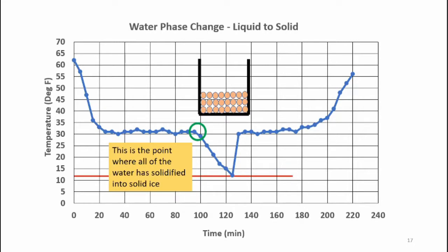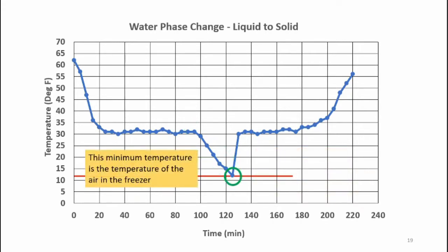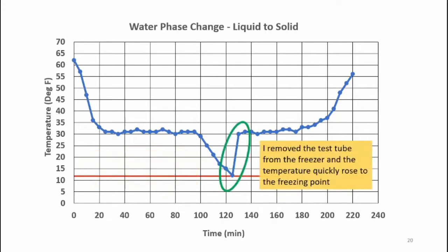This is the point where the water has become a total crystalline solid, and the temperature of the water can start to drop once again. It decreases down to the temperature of the air in the freezer — it will never get any colder than the temperature of the air. This is the minimum point. Once I remove the ice from the freezer, it begins to heat up and quickly warms up to 32 degrees, the melting point of water.